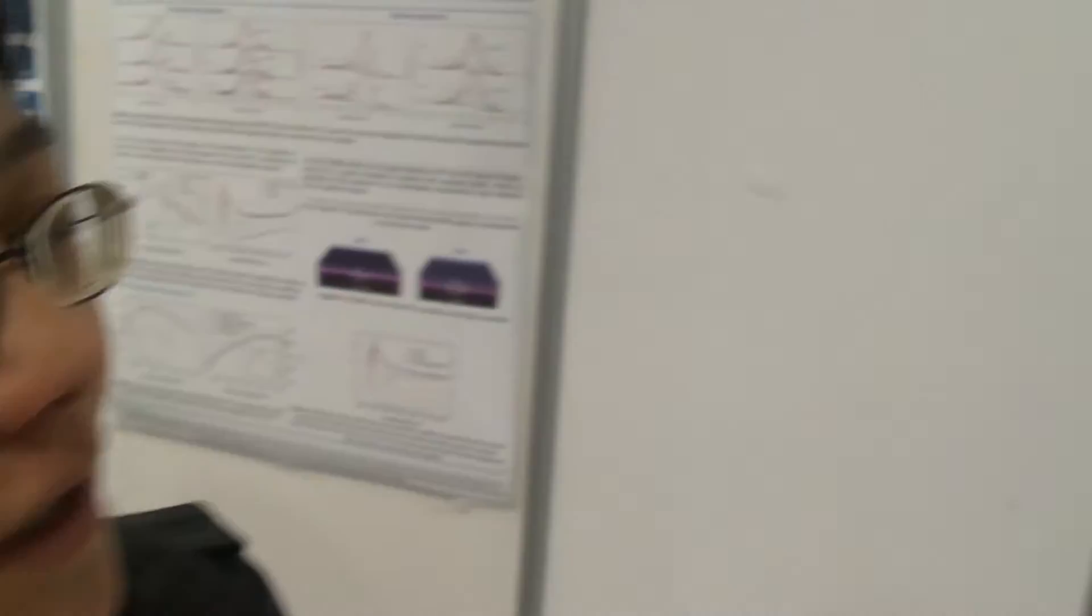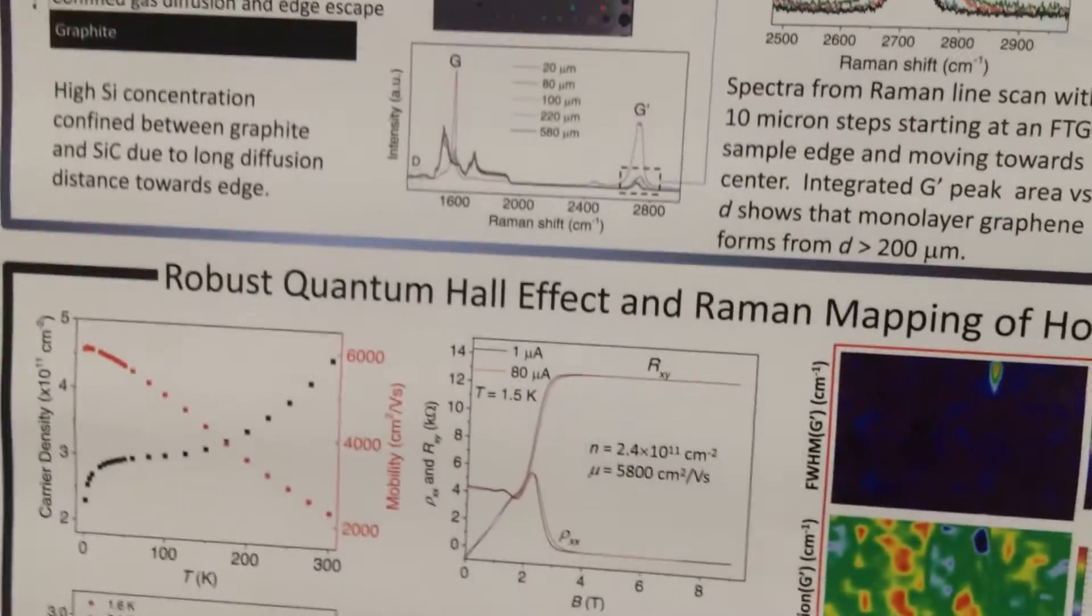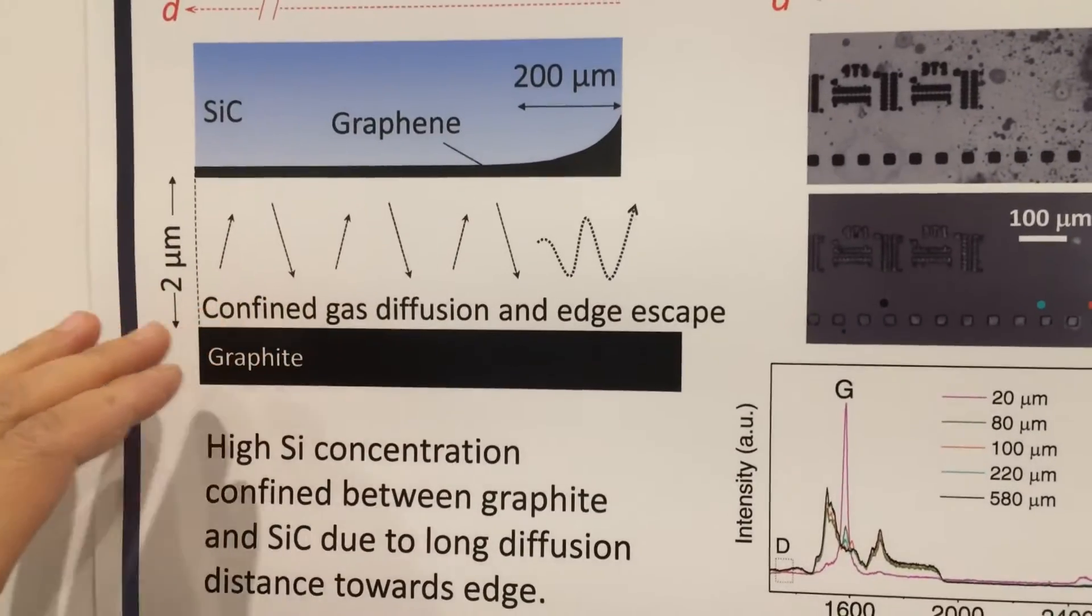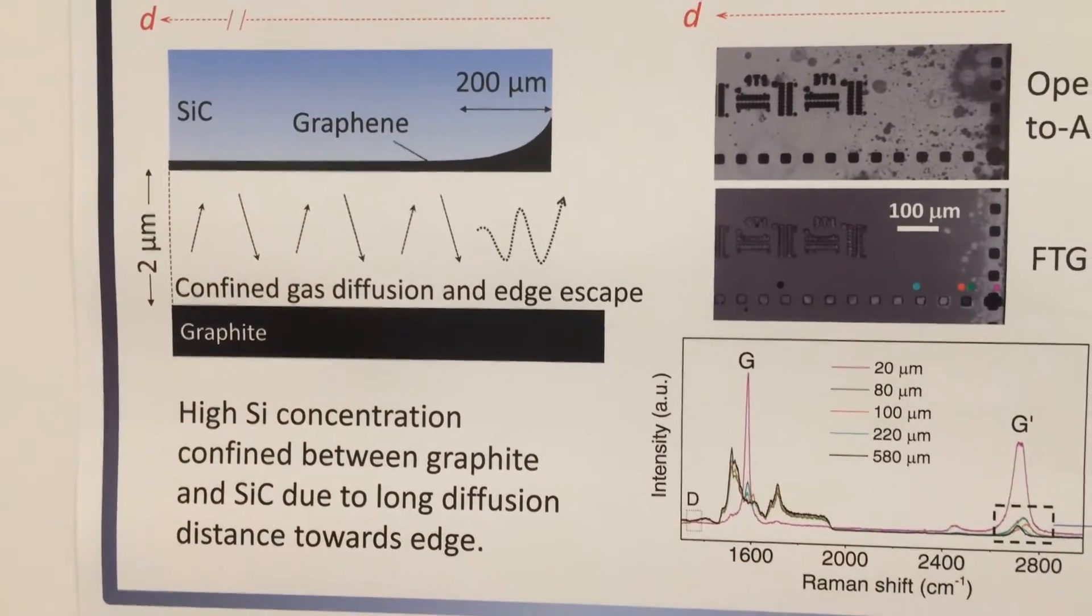But we are presenting a new method which uses a graphite disk to cover the silicon carbide substrate, so that the gas, the silicon gas, which is essential for the graphene to grow,